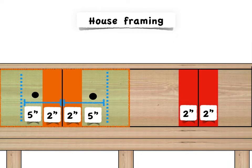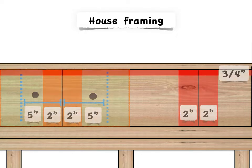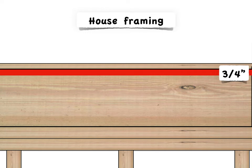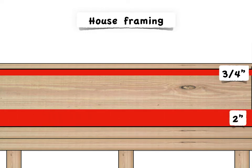All right, let's move on now to the top and bottom edges. There are no fasteners permitted in the top three-quarter inches of the band joist or the bottom two inches. So I've got those marked out in red. No fasteners.